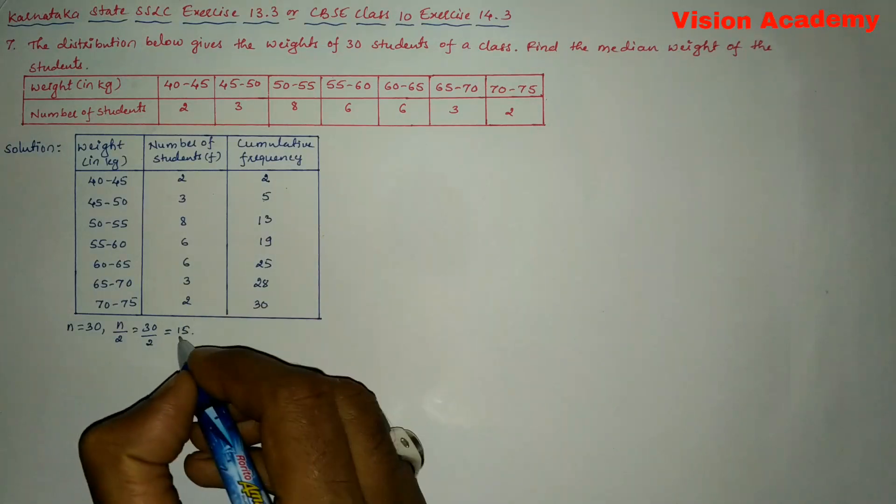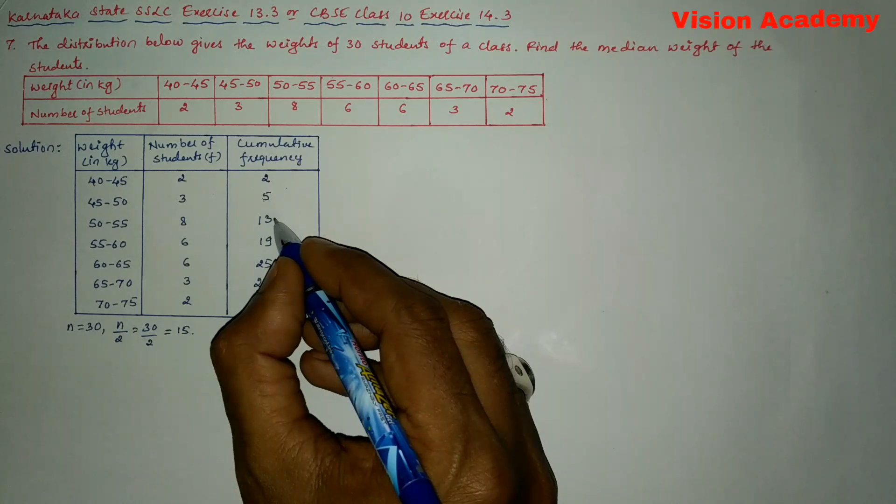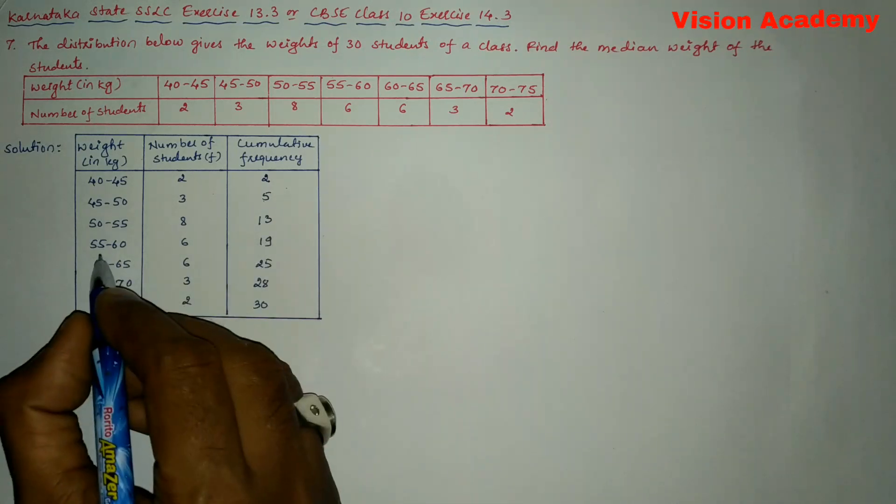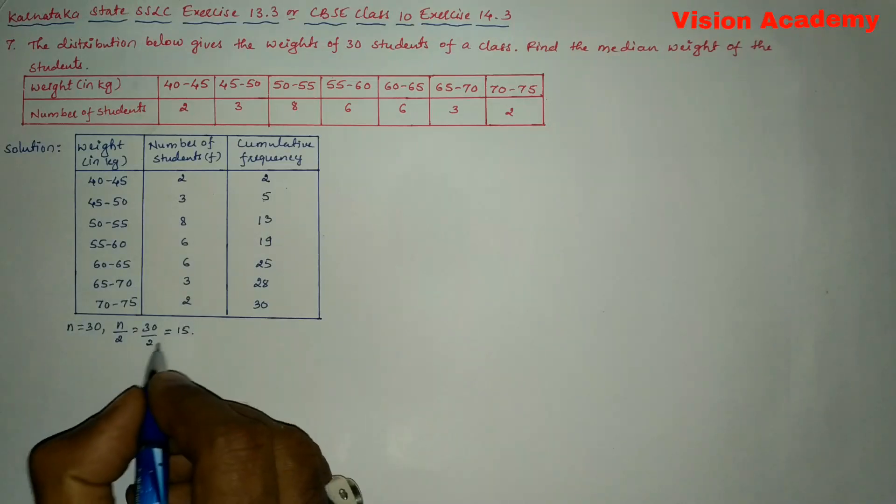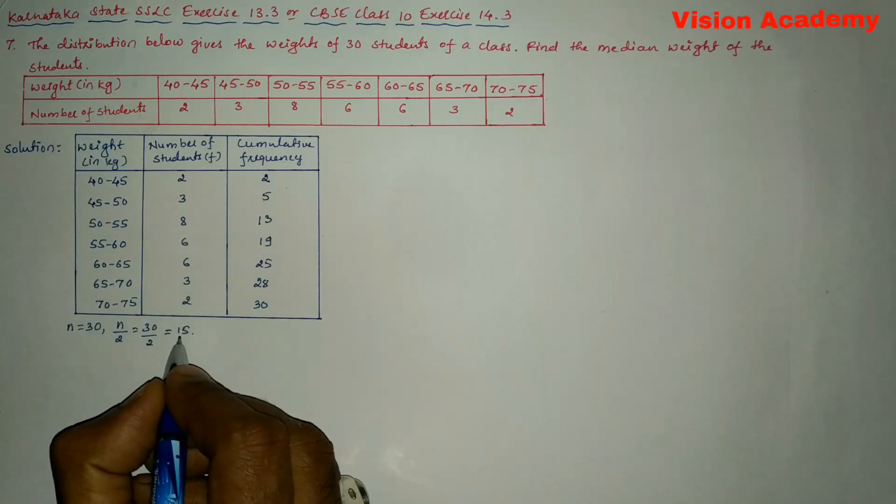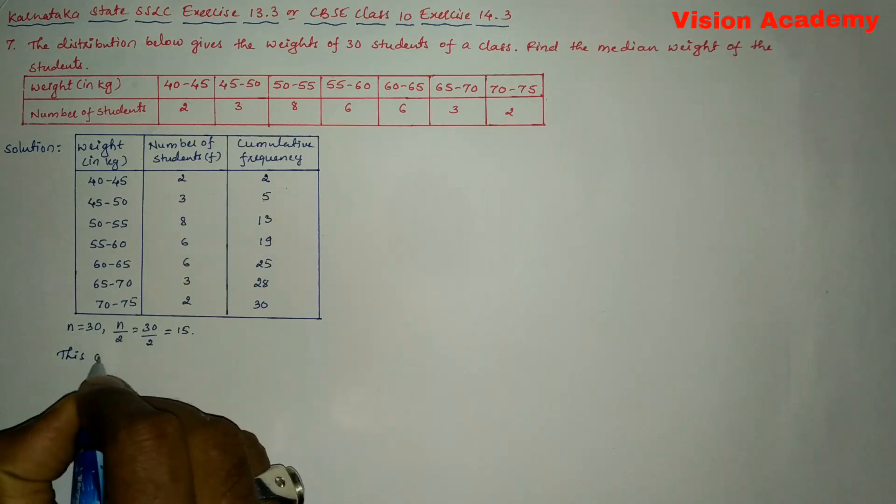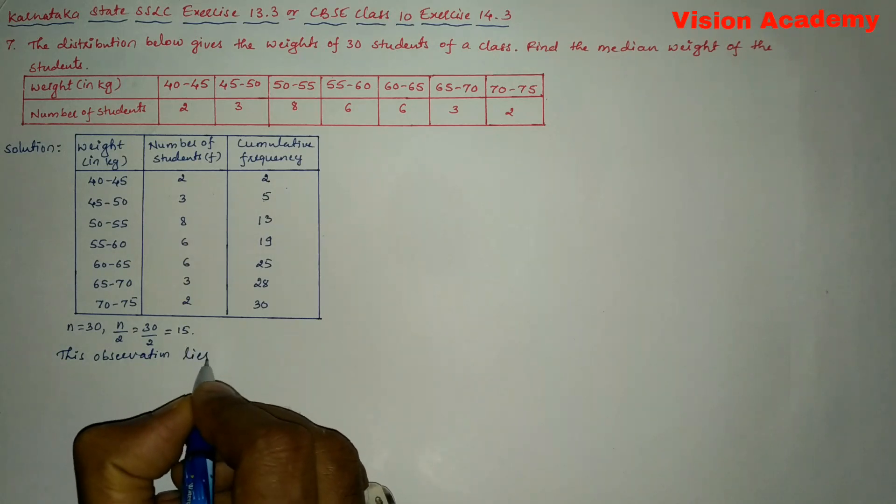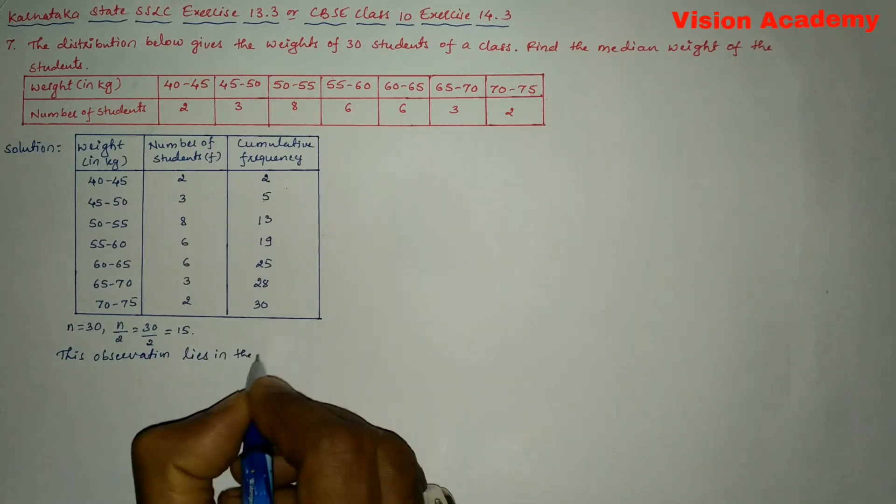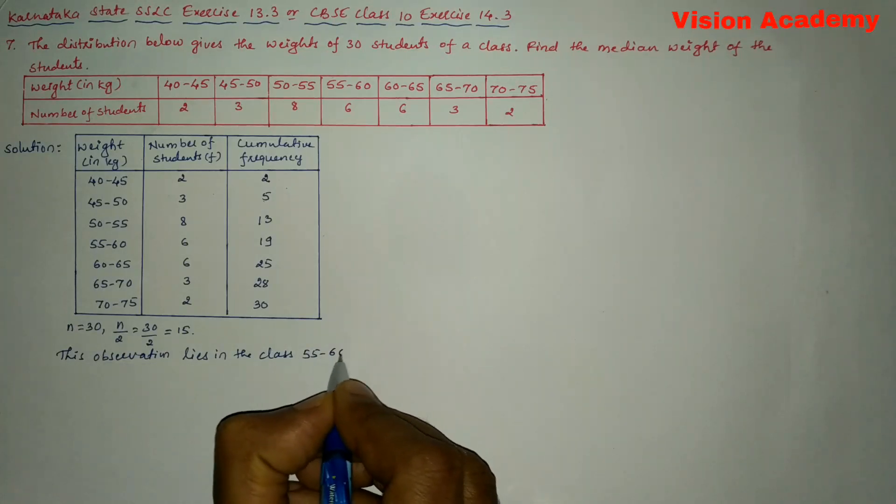You can see here this particular frequency lies in between 13 and 19. Hence 55 and 60 is the class in which this particular frequency lies. So here we will write this observation lies in the class 55 to 60.